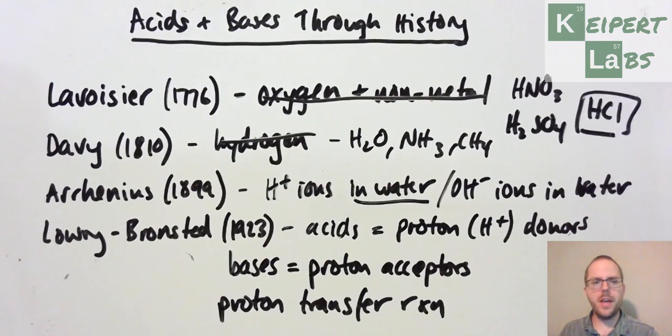Alright, so we've talked about Lavoisier, we've talked about Davy, Arrhenius, and Lowry and Bronsted, and seeing how their ideas of acids and bases have improved over time. Alright, thanks very much for watching. Bye for now.